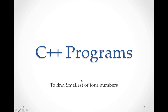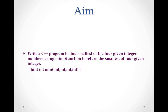That is to find the smallest of four numbers. The aim of this program is to write a C++ program to find the smallest of four given numbers, but all four numbers should be integers. You have to find out the smallest using the mean function.